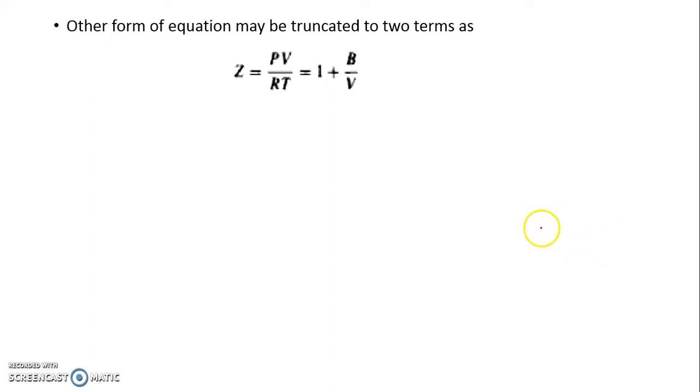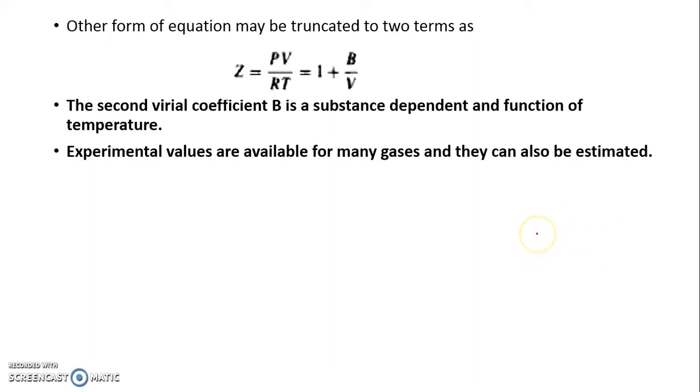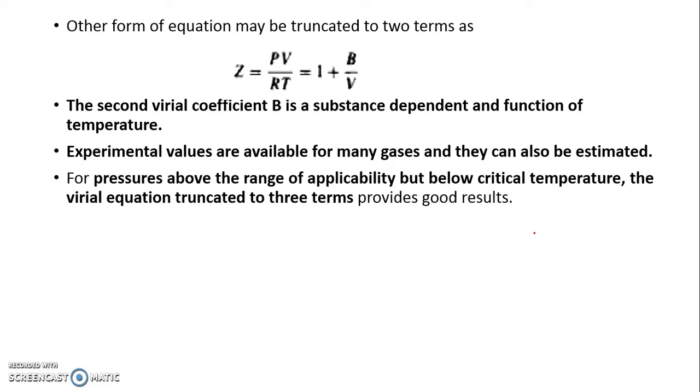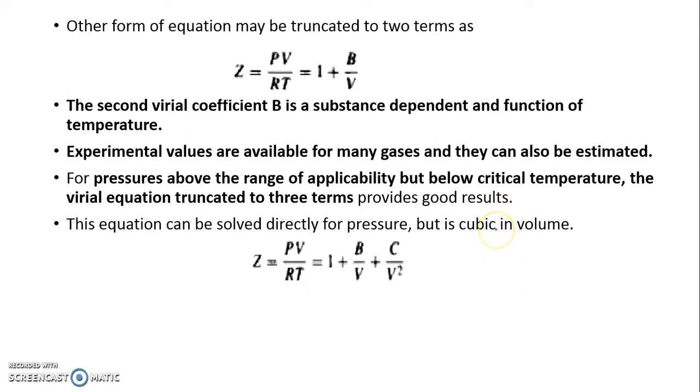Other form of equation may be truncated to two terms, and that is z equals 1 plus b by v. For pressure above the range of applicability but below the critical temperature, the virial equation truncated to three terms will provide good result - that is z equals 1 plus b by v plus c upon v square will be a good representation of virial equation of state. This can be converted into cubic equation and solution for v can be obtained by some kind of iterative method.